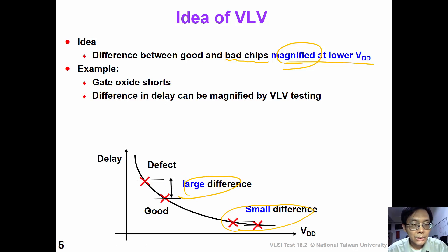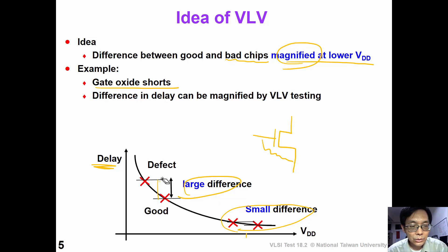For example, this figure shows gate delay with a gate oxide short defect. Suppose there is a gate oxide short defect — the transistor is going to be slower. However, at nominal VDD, the difference between a good and defective transistor is not very significant. However, at lower voltage, the difference is larger so that we can tell them apart.